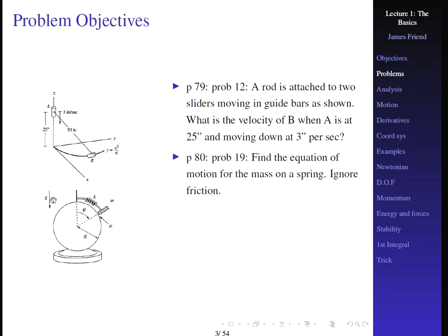On page 80, problem 19, we can try to determine the equation of motion for a mass on a spring. Notice that the mass is not simply falling vertically — it's actually sitting on a spherical surface. We'll ignore friction for the time being and talk about kinematics rather than dynamics.